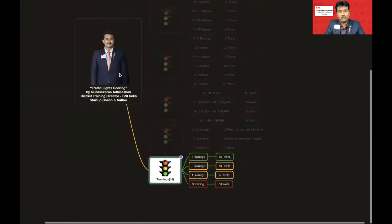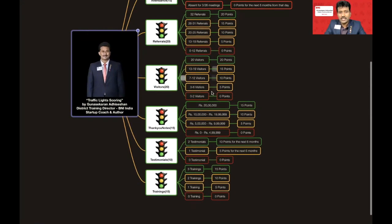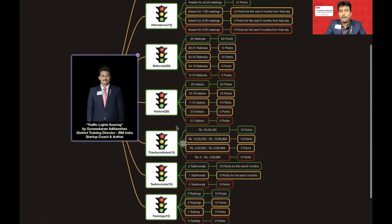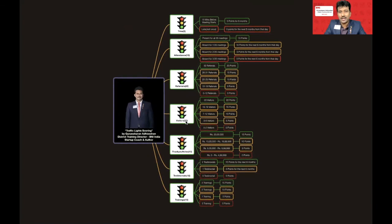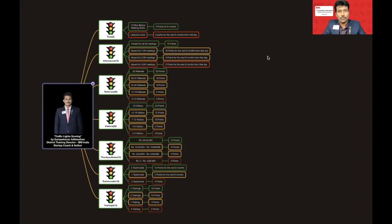As a new member, if you score only 5 points in Visitors and 5 in Thank You Notes — losing 15 points in each — but score full marks in all other categories, you can still comfortably become a Green member. Green requires 70 points minimum, and once you achieve that, aim for 100 points. All the best!